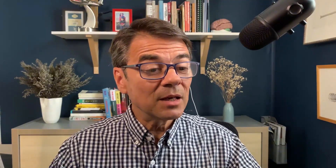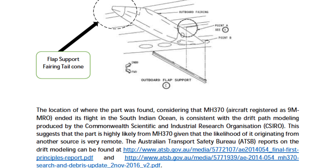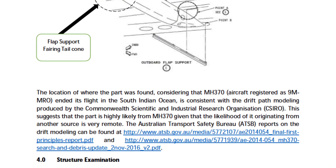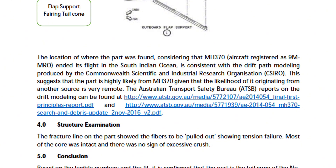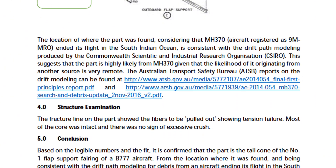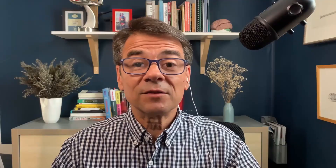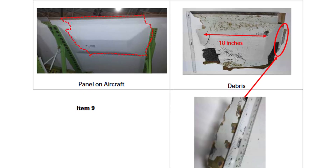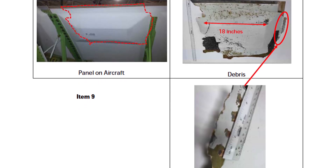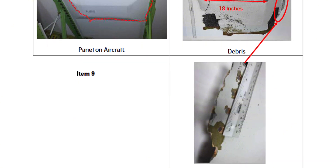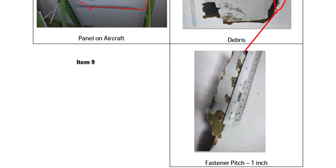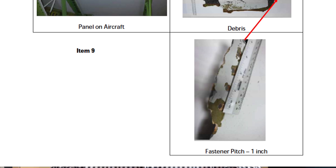Item eight, flap support fairing tail cone: 'The fracture line on the part showed the fibers to be pulled out, showing tension failure. Most of the core was intact, and there was no sign of excessive crush.' Item nine, upper fixed panel forward of the flap on left side: 'The fracture lines showed that the fibers were pulled, but there were no signs that they were kinked. The core was intact and had not crushed.' Tension failure — pulling apart.